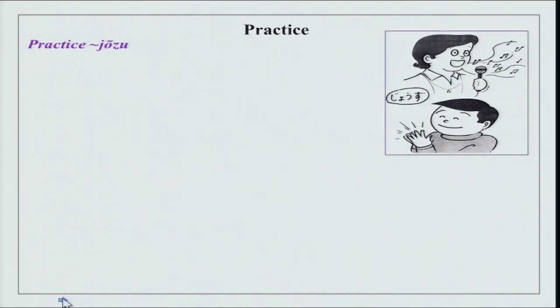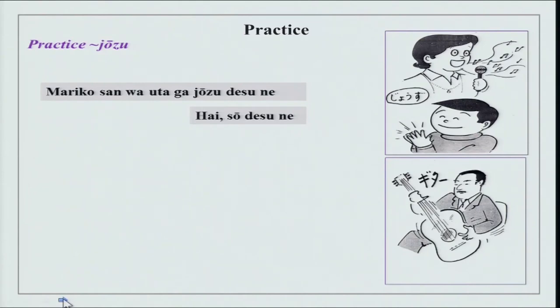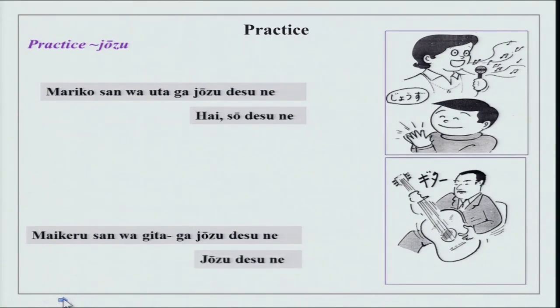We also did Jouzu last time. Quickly: 'Mariko-san wa uta ga Jouzu desu ne?' — Jouzu takes particle ga. 'Hai, so desu ne.' You will never say that you yourself are Jouzu at something — it is always someone else who is Jouzu. And when someone says you are good at something, you always reply 'madamada desu' — I still have more to learn. You never say you are very good at something yourself. 'Maikeru-san wa gitaa ga Jouzu desu ne?' — 'Jouzu desu ne' or 'So desu ne.'